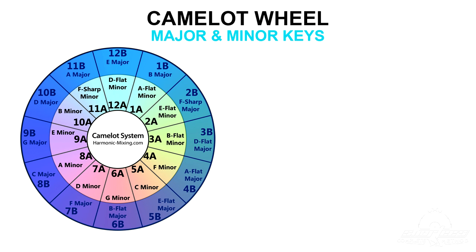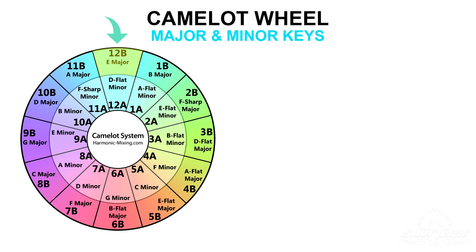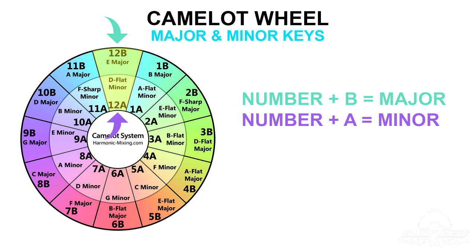Just like the circle of fifths, the outer circle of the wheel represents major keys and the inner circle represents the relative minor keys. The major keys are always labeled with the number and the letter B, and the minor keys are always labeled with the number and the letter A. So just remember that these A's and B's don't actually represent the actual key of A or the key of B — they're just there to differentiate major and minor.